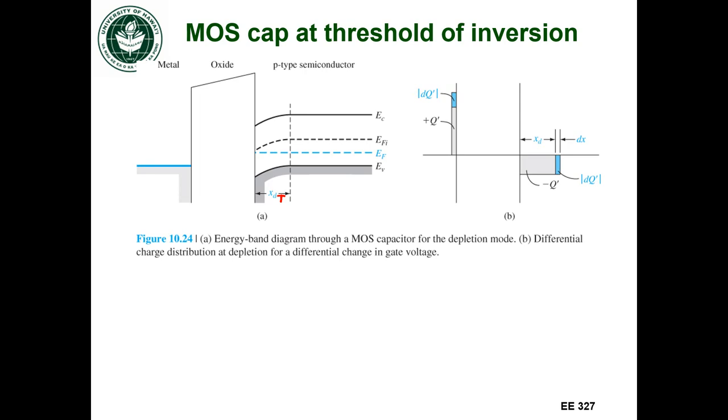The charge distribution still looks the same. I haven't created an inversion layer yet, so I'm just modulating charge on my metal and charge in the space charge region.